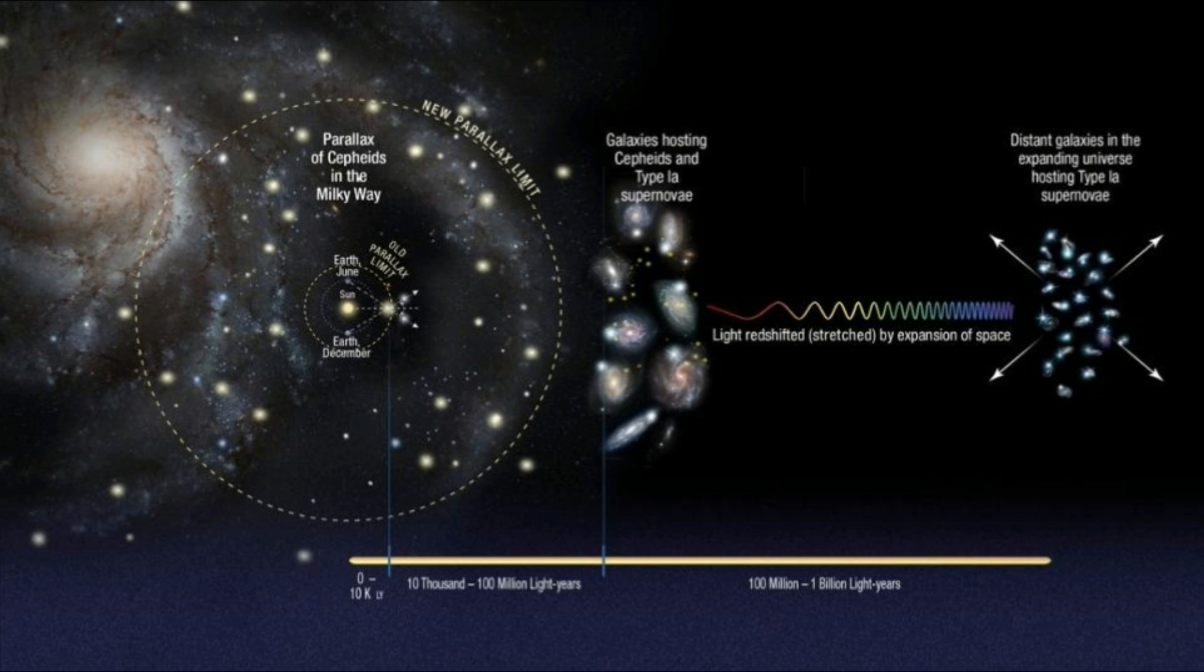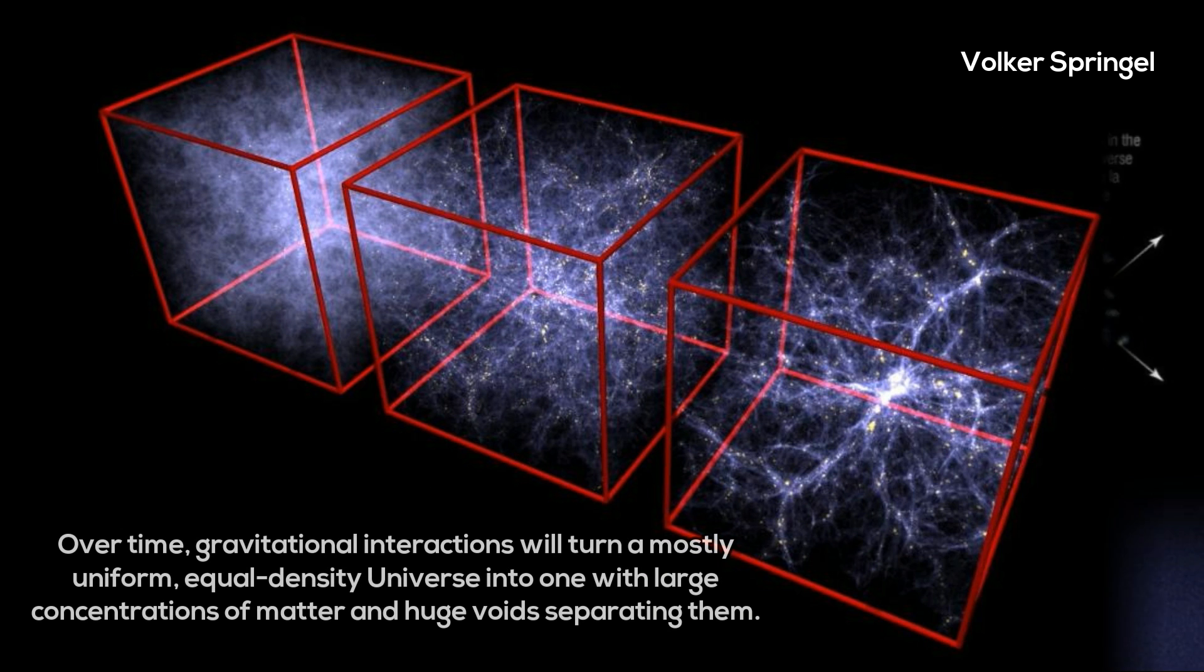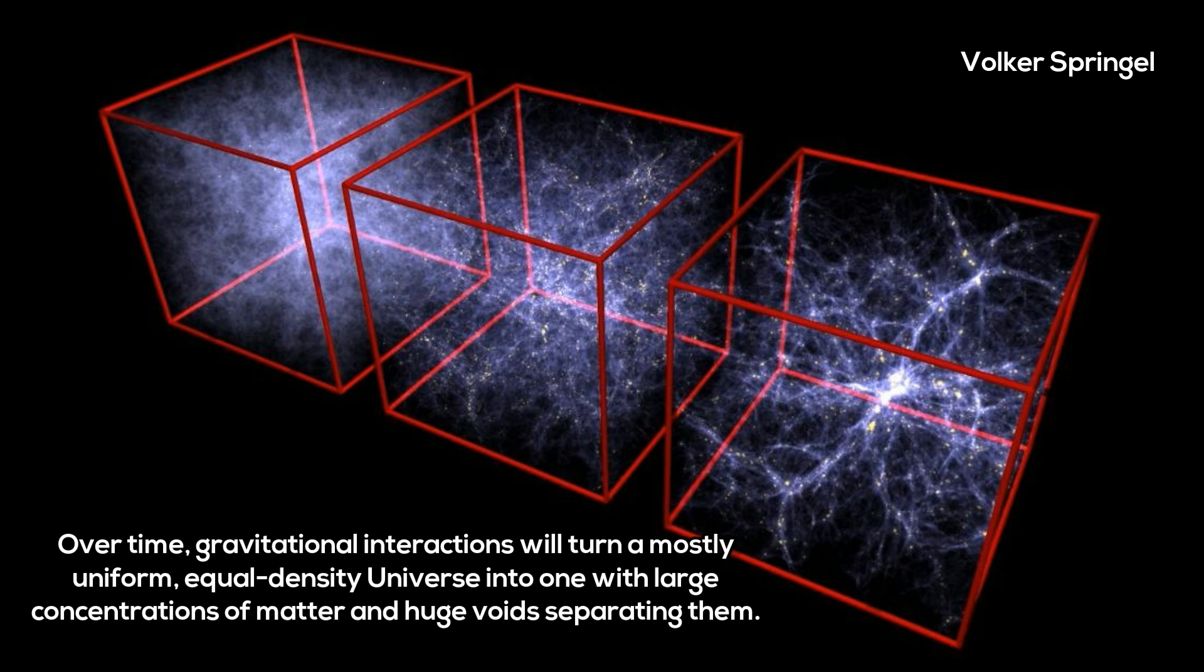The void that contains the Milky Way, known as the KBC void for Keenan, Barger, and the University of Hawaii's Lennox Cowie, is at least seven times as large as the average, with a radius measuring roughly 1 billion light-years. To date, it is the largest void known to science.